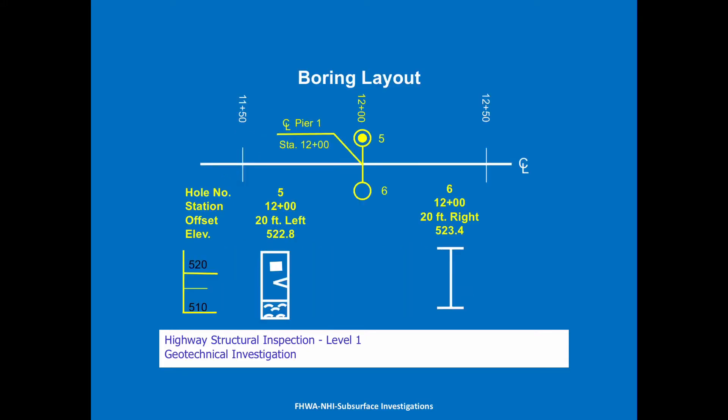So, boring layout. The first few sheets, usually S4 or so in your bridge plans, will be your boring layout. It'll give you the centerline of bridge with stations, and then at each substructure location — inbent or abutment, pier one, pier two, and so on — they'll show those on the boring layout.